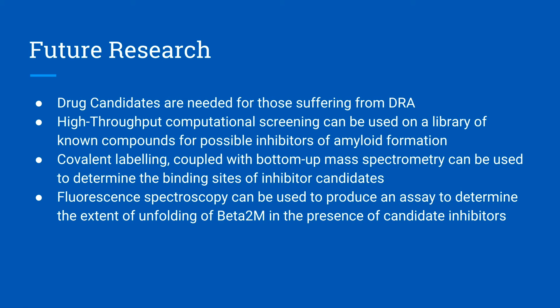For future research, drug candidates are needed for those suffering from DRA. High-throughput computational screening can be used on a library of known compounds for possible inhibitors of amyloid formation. Covalent labeling coupled with bottom-up mass spectrometry can be used to determine the binding sites of inhibitor candidates, and fluorescent spectroscopy can be used to produce an assay to determine the extent of unfolding of beta-2-microglobulin in the presence of said candidate inhibitors.